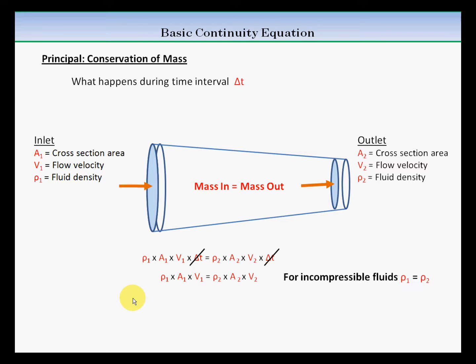If we impose the condition of incompressible fluids, which is true for the case of water at normal speeds, the density is constant and it does not change from inlet to outlet. In that case, the density can be cancelled, and we get the equation a1 times v1 is a2 times v2 are equal, and this is the continuity equation.